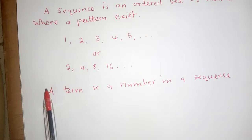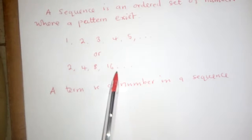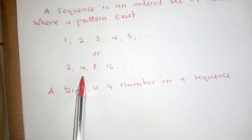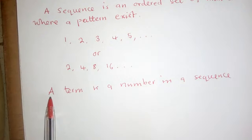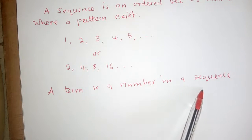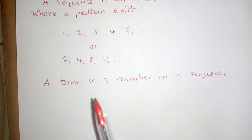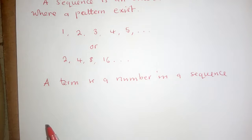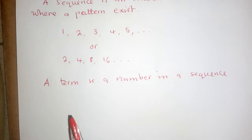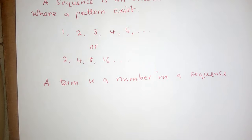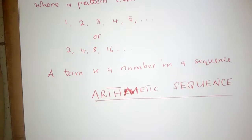Terms are used to identify the numbers in a sequence — at each term position there is a corresponding number. Now, there are many types of sequences: arithmetic, geometric, harmonic, and more. But our focus will be on arithmetic sequence.